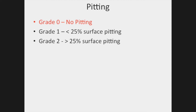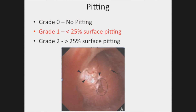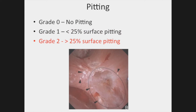Pitting is defined as erosion of the papillary surface. A pitting score of zero is assigned when no pitting is evident. A pitting score of one is assigned when there is some pitting but less than 25% of the total papillary surface is involved, as seen in the image below. A pitting score of two is assigned when greater than 25% of the papillary surface is involved.